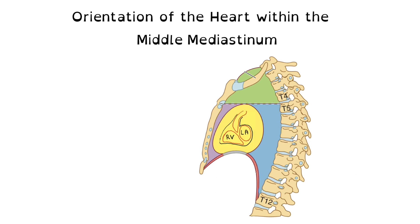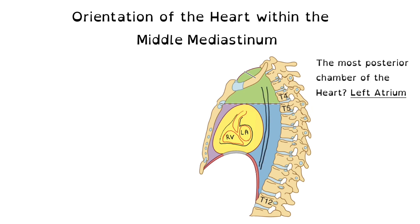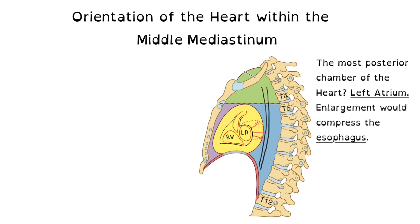Now that we've talked about the mediastinum, it's important to be aware of the orientation of the heart within it. The most posterior chamber of the heart is the left atrium. The esophagus is located very close to the posterior aspect of the middle mediastinum. Therefore, if we have an enlargement of the left atrium, we may compress the esophagus, causing a patient to have pain and difficulty swallowing.